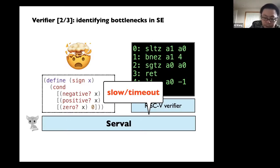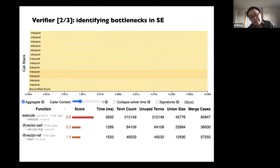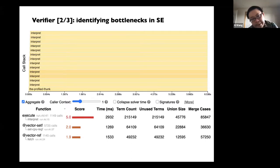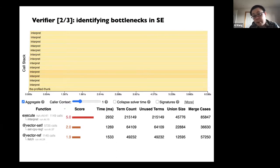The cool part of using Rosette is it has a profiler for symbolic evaluation. You can actually run it. For the simple sign program it won't trigger anything, but I added more control flows to the program to cause it to basically explode. And here's the result: if you run this symbolic profiler, you can observe it either offline or online during symbolic evaluation.